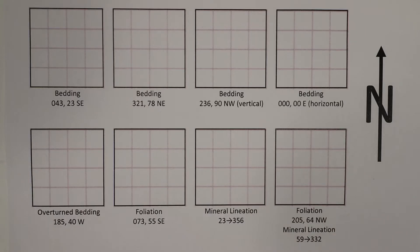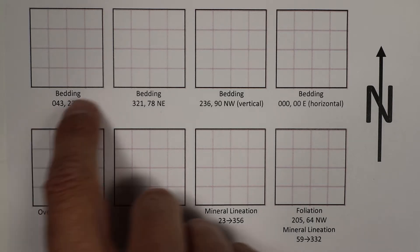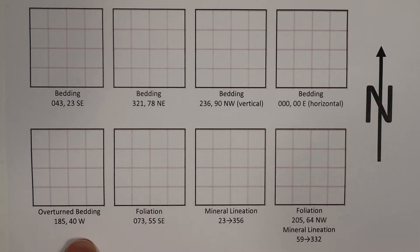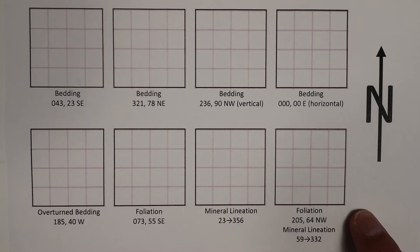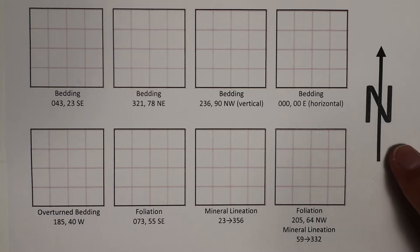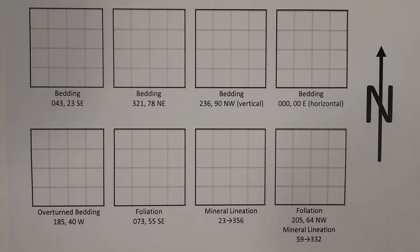Here are eight examples of structural measurements. We have bedding, overturned bedding, foliation, mineral lineation, and a combined foliation and mineral lineation symbol. In all these examples, we're assuming that north is straight up on the map, which is true for many maps around the world. Let's start with bedding.